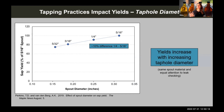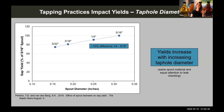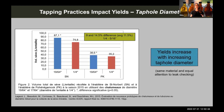The second tapping practice that impacts yield is tap hole diameter. Yields increase with increasing tap hole diameter — about a 10 percent difference between a five-sixteenth-inch and a quarter-inch tap hole, with equal spout material, leak checking, vacuum level, and everything else the same. Notably, this was almost identical to what a study by Centre ACER found — about an 11 percent difference in yield between a quarter-inch and a five-sixteenth-inch tap hole.